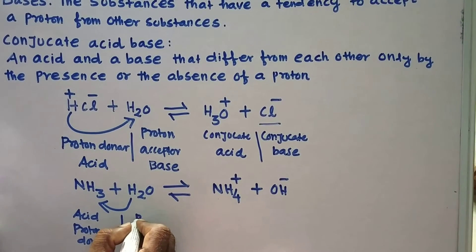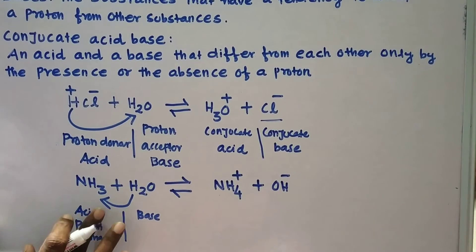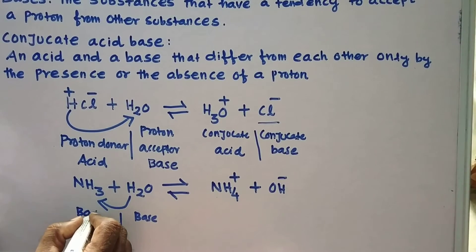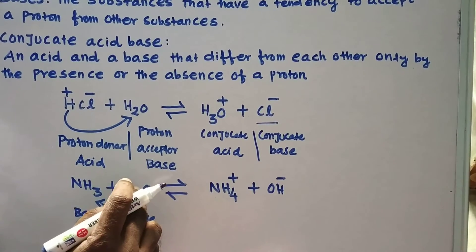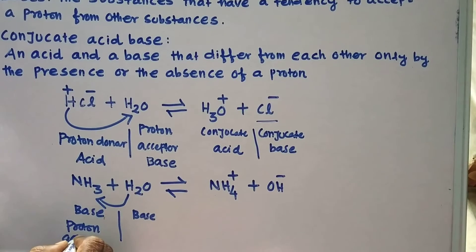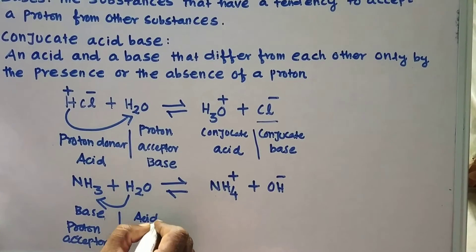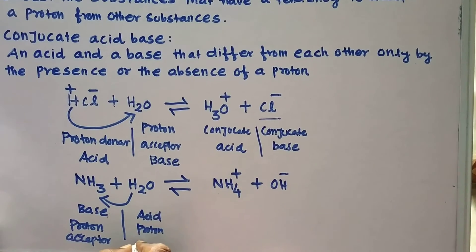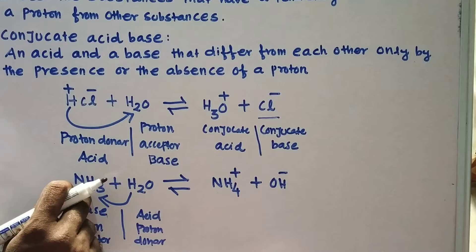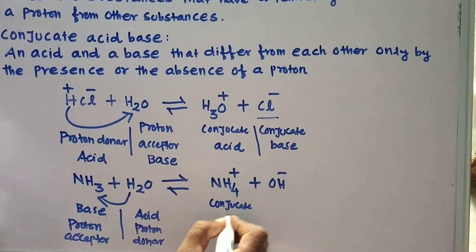Water acts as a base — wait, water acts as an acid here because it donates the proton to ammonia. The ammonia accepts the H⁺ ion from the water; therefore it is a proton acceptor. After receiving the proton from the water, ammonia becomes ammonium ion NH₄⁺. Therefore, NH₄⁺ is the conjugate acid.